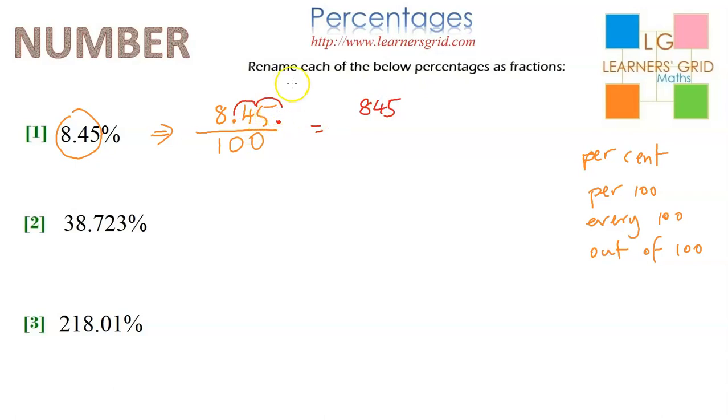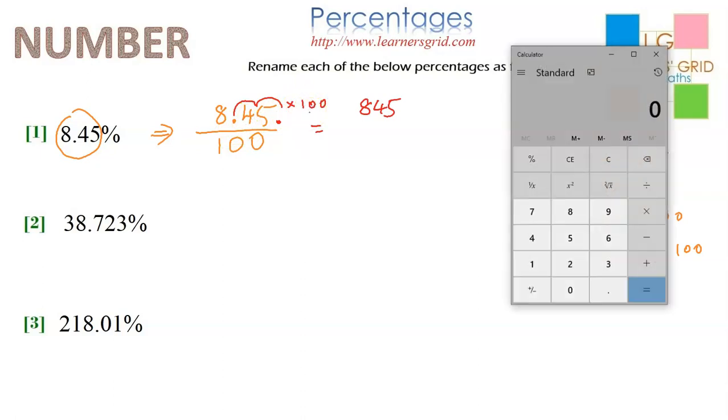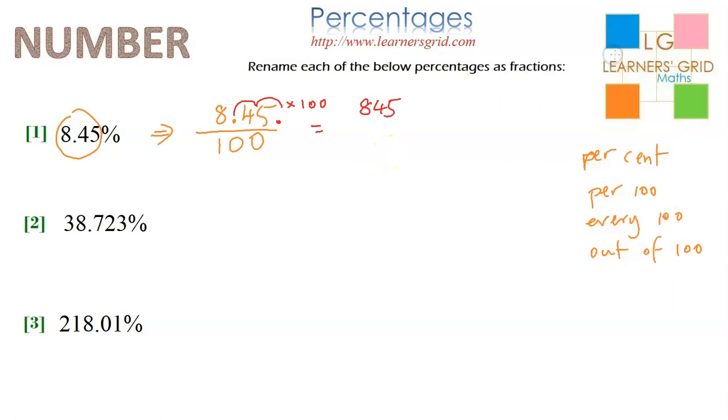In case that's confusing, all I'm doing here is multiplying this numerator by 100. Just to prove that, let me bring up a calculator: 8.45 times 100 equals 845. That's what I've done. I've just shortcut it by moving it two spaces to the right.